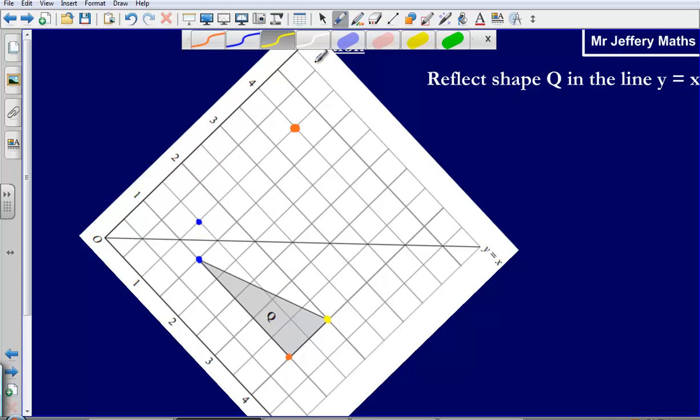Then the last one, this yellow one. This one is one, two away from the mirror line. So we have to count two after the mirror line. One, two. And that gives us a new shape.